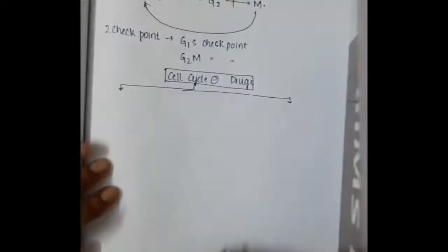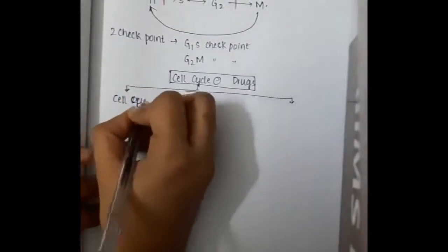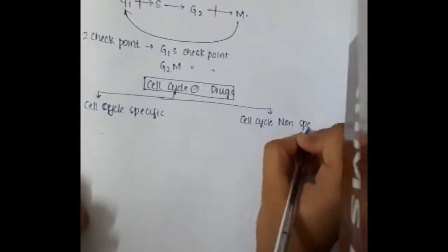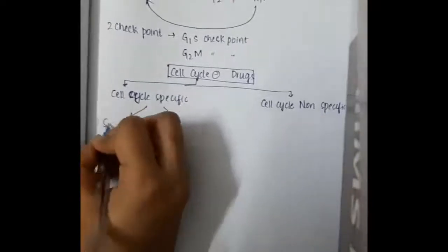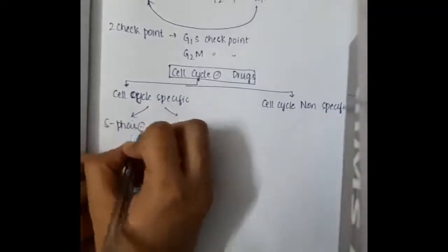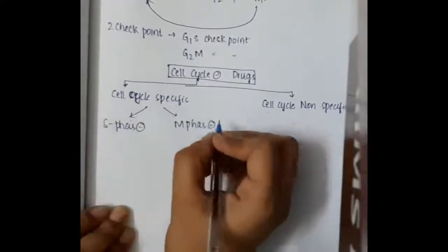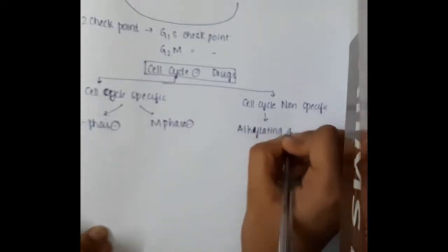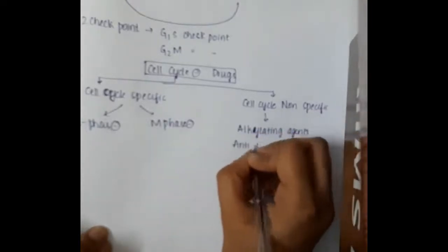If you see the cell cycle inhibitor drugs, these are of two types. We have cell cycle specific drugs and cell cycle non-specific drugs. Cell cycle specific drugs include S phase and M phase inhibitors. Cell cycle non-specific drugs include alkylating agents, anti-tumor antibiotics, and platinum compounds.